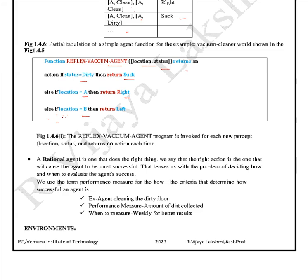A rational agent is one that does the right thing. The right action is the one that will cause the agent to be more successful. This brings up the problem of deciding how and when to evaluate the agent's success, which we measure using a performance measure.